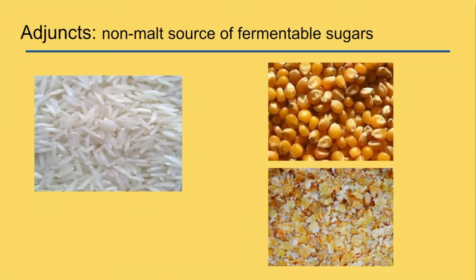Adjuncts are a non-malt source of fermentable sugars. As you can see in my pictures, I have rice and corn. That bottom picture there is flaked corn. Most people think of adjuncts, they think of macro beers like Bud or Coors. However, that's not the case. You can use these because you can derive sugars from them.